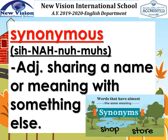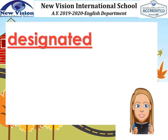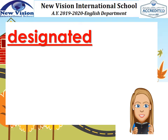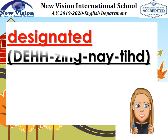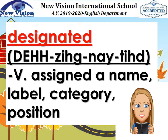Say, synonymous. How about this word? Say, designated. This is a verb which means assigned a name, label, category, or position. Just like me now — I am designated as your teacher. Say, designated. Great!